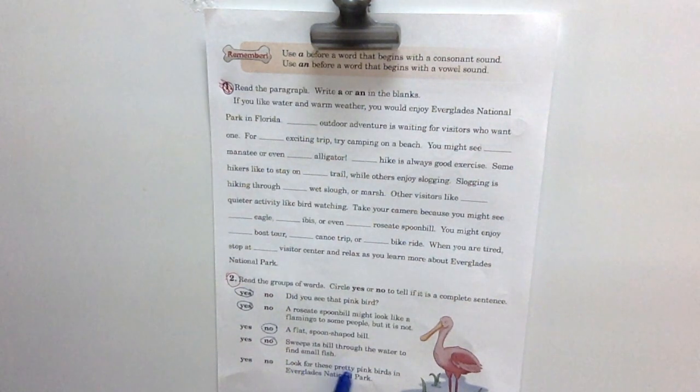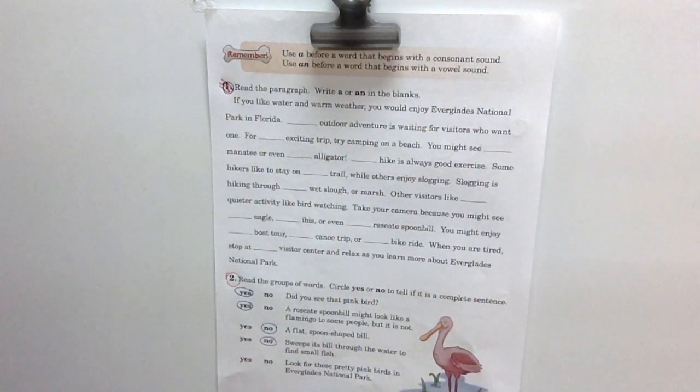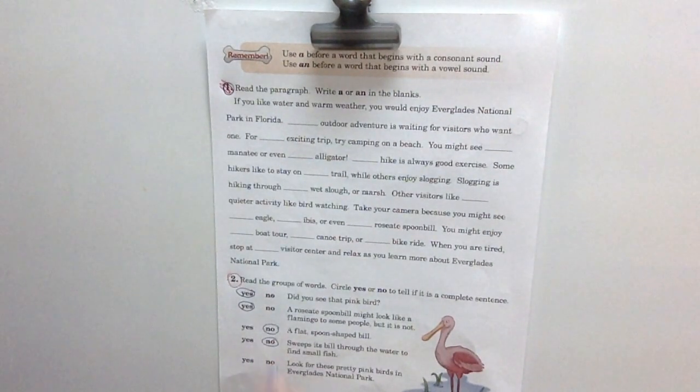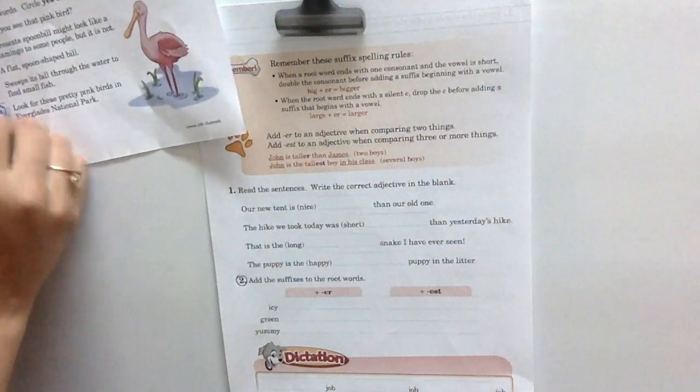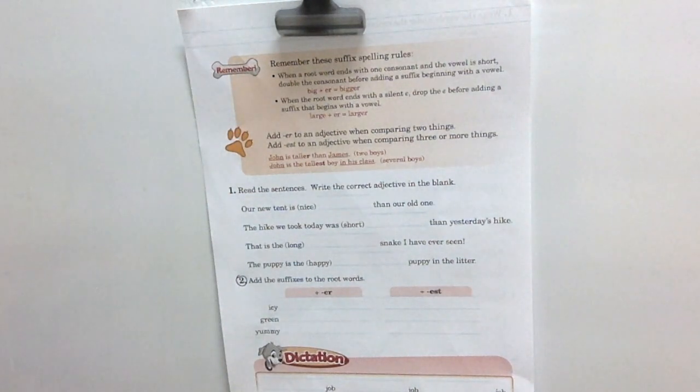Last one. Look for these pretty pink birds in Everglades National Park. Look for these pretty pink birds in Everglades National Park. What do you think? What do you think? I would say no. Good job. Alright. Let's move on to page 273. 273, okay. 273. Oh and I'm sorry. I believe this is technically a complete sentence. There you go, it was. Sorry. Okay, moving on to page 273. We're at question two.